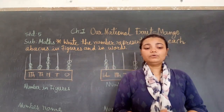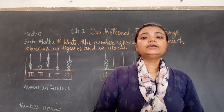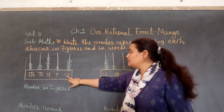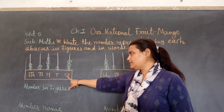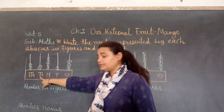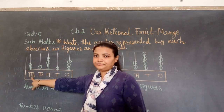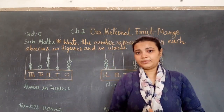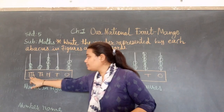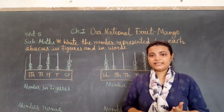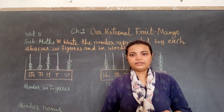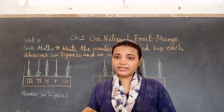Let's start with the numbers. So this is: ones, then tens, hundreds, thousand, ten thousand. This is the Indian system. So in the Indian system we have: ones, tens, hundreds, thousands, ten thousand, hundred thousand. Those are international, but in the Indian system it is called lakh.